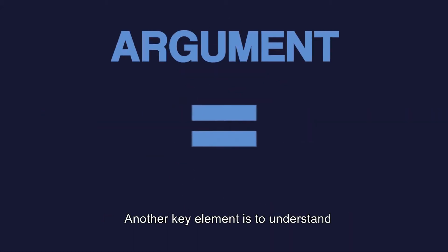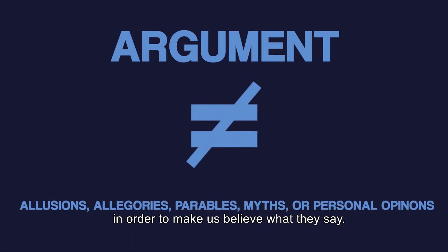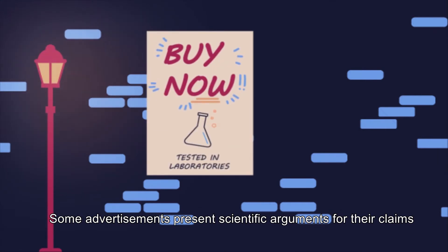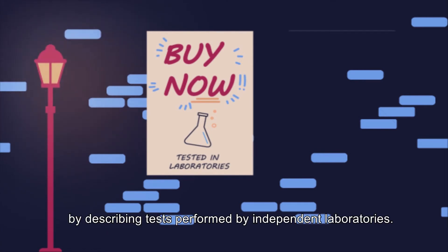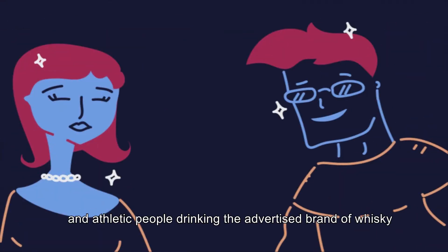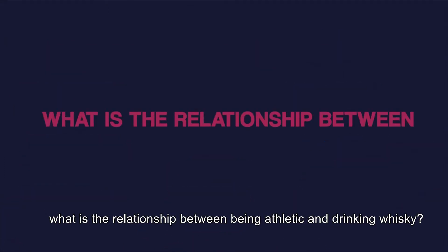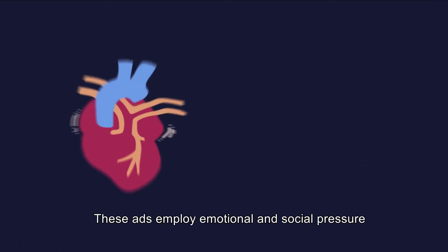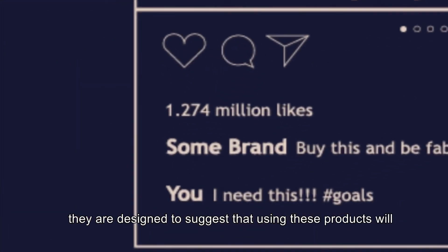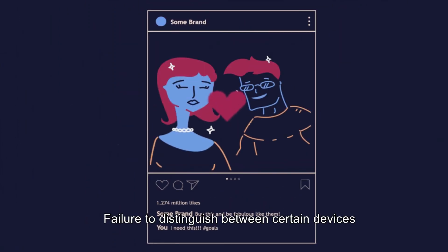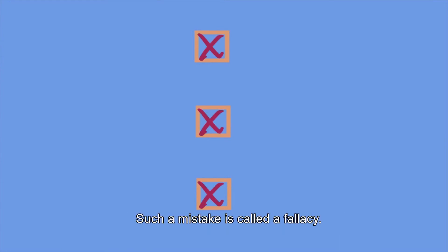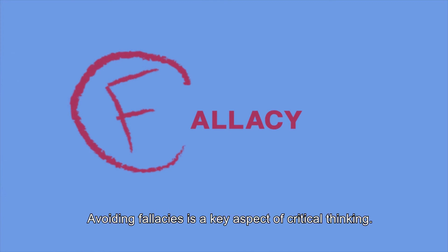Another key element is to understand the difference between arguments and other linguistic devices that people use in order to make us believe what they say. Advertising is notorious for persuasive claims about products. Some advertisements present scientific arguments for their claims, for example by describing tests performed by independent laboratories. But many present no actual arguments for their claims. We have all seen ads that show beautiful and athletic people drinking the advertised brand of whiskey. But one may critically ask: what is the relationship between being athletic and drinking whiskey? These ads employ emotional and social pressure in place of rational arguments to influence people to use their products. They're designed to suggest that using these products will let us share the fashionable life depicted in the ad. Failure to distinguish between psychological persuasion and factual evidence that supports an assertion is an intellectual mistake called a fallacy. Avoiding fallacy is a key aspect of critical thinking.